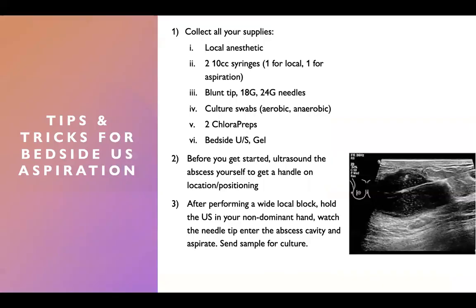Some tips and tricks for bedside ultrasound aspiration: first, collect all the supplies you'll need. You want your local anesthetic, two 10cc syringes — one for your local anesthetic and one for aspiration — a blunt tip needle, an 18-gauge needle, and a 24-gauge needle. You'll need culture swabs for when you send your specimen to pathology, two chloroprep sticks, and of course your bedside ultrasound and gel.